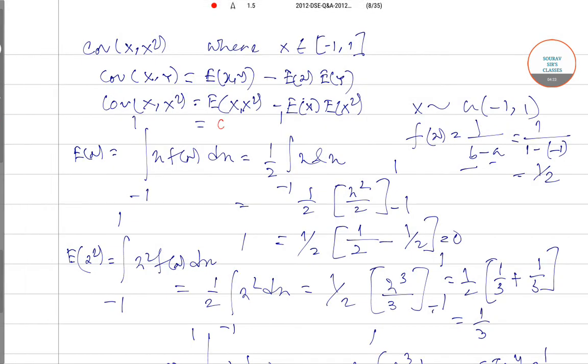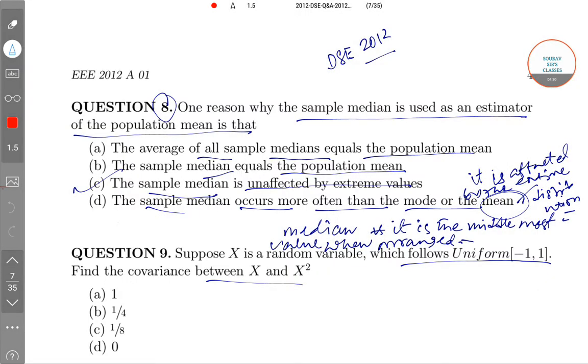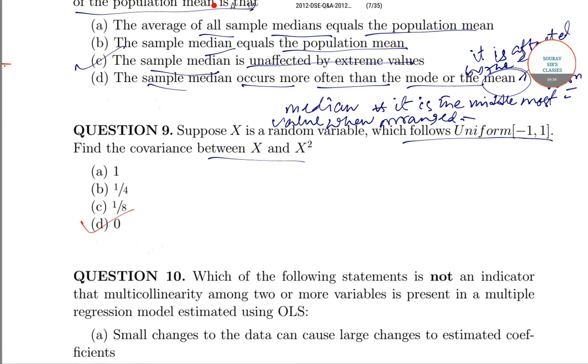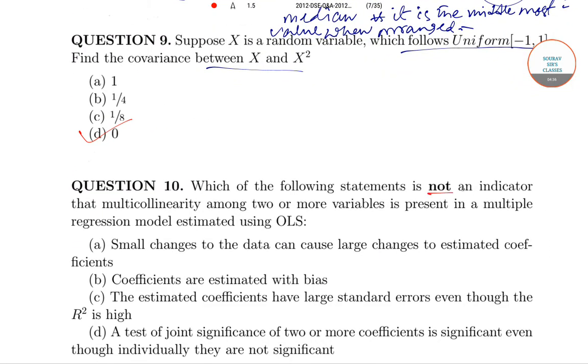Therefore, the correct option is option D. Now question 10 says: which of the following statements is not an indicator of multicollinearity among two or more variables present in a multiple regression model estimated using OLS?